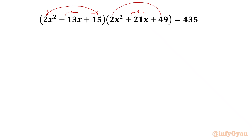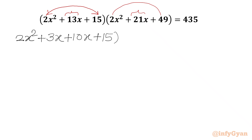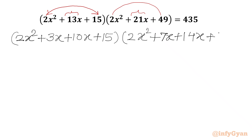So our split is clear. I can write here 2x² plus 3x plus 10x plus 15. In the second bracket we will split: 2x² as it is, plus 7x plus 14x, plus 49, equal to 435.